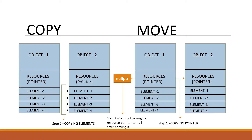If you want to perform the copy operation, we simply copy element by element to the other object. As you can see, element one of object one is copied to element one of object two, element two of object one is copied to element two of object two, and so on until element four. This is called deep copy — we perform an element-by-element copy.